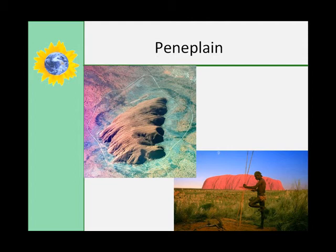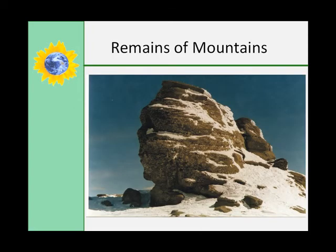Peneplains are surfaces that have eroded to an almost perfectly flat surface, and a monadnock is an isolated rocky remnant of erosion left standing above it. Peneplains are an old-fashioned concept, first put forth in 1889, with the idea that landscapes evolved from young, rugged form to an end stage approximating a perfect plane. In most cases this is irrelevant because the Earth's surface changes too much, but Uluru and Mount Monadnock in southern New Hampshire are great examples. Around the world, you can recognize the remains of mountain belts that are a couple of billion years old.